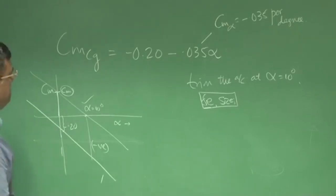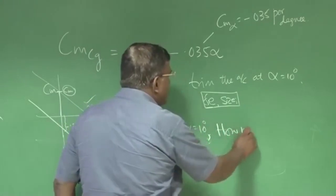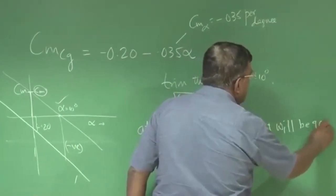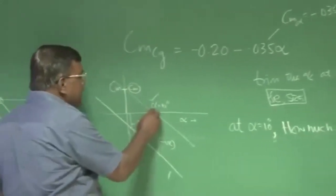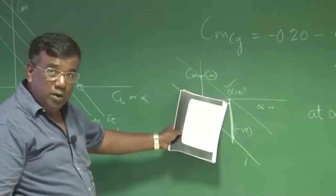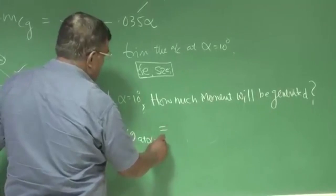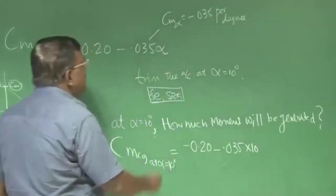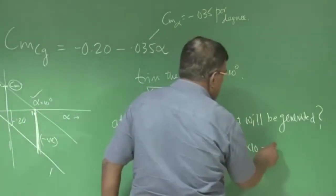Now let us see, at alpha equal to 10 degrees, how much moment will be generated? That is only what we have to nullify. That is, at alpha 10 degrees, this much moment will be generated, negative moment, that I have to nullify so that here the moment is zero so that it becomes a trim point. That I can easily find from here, that CM_CG at alpha equal to 10 degrees will be minus 0.20 minus 0.035 times 10, because the CM_alpha is per degree. And if I do that, I get the value as minus 0.55.